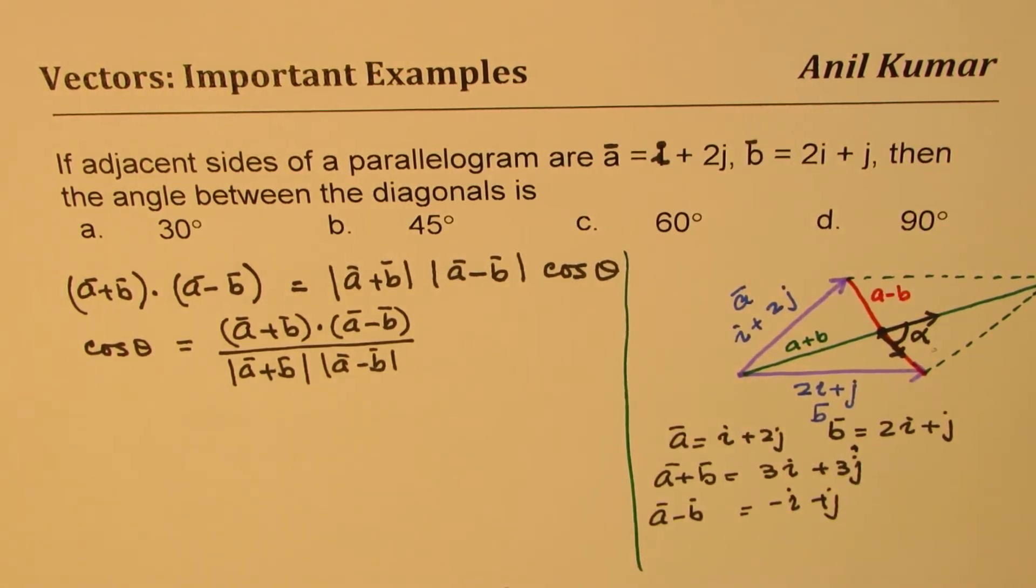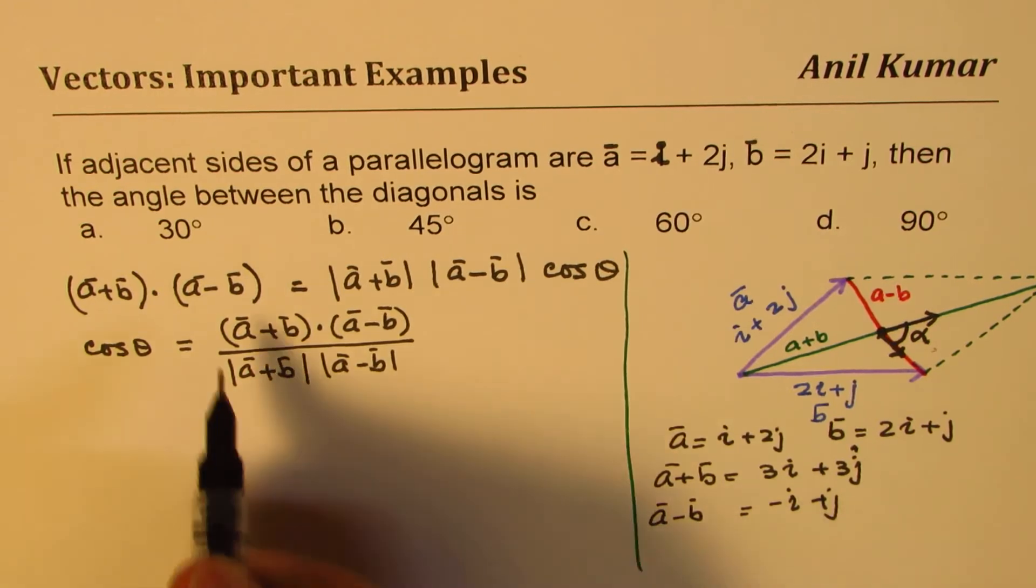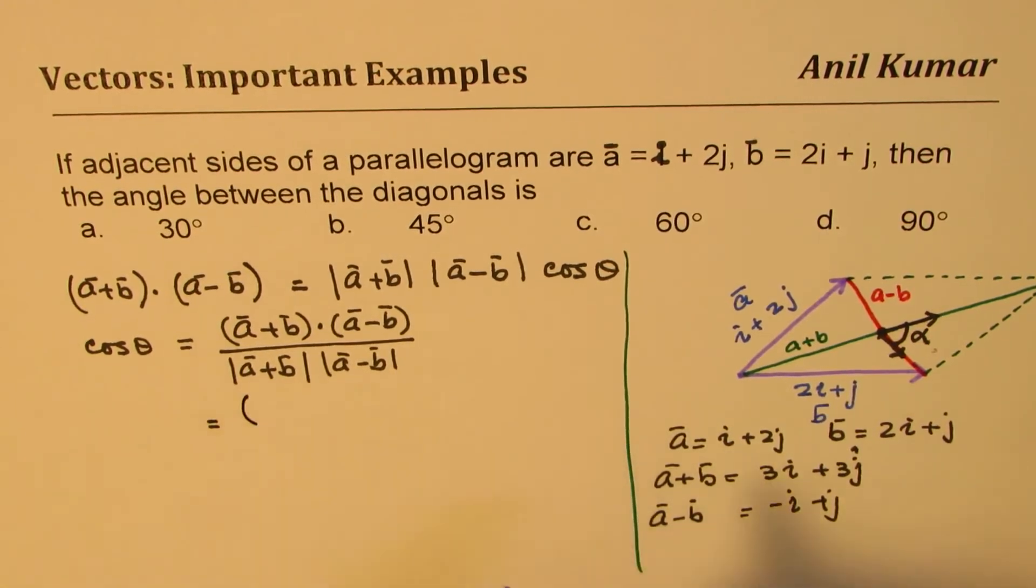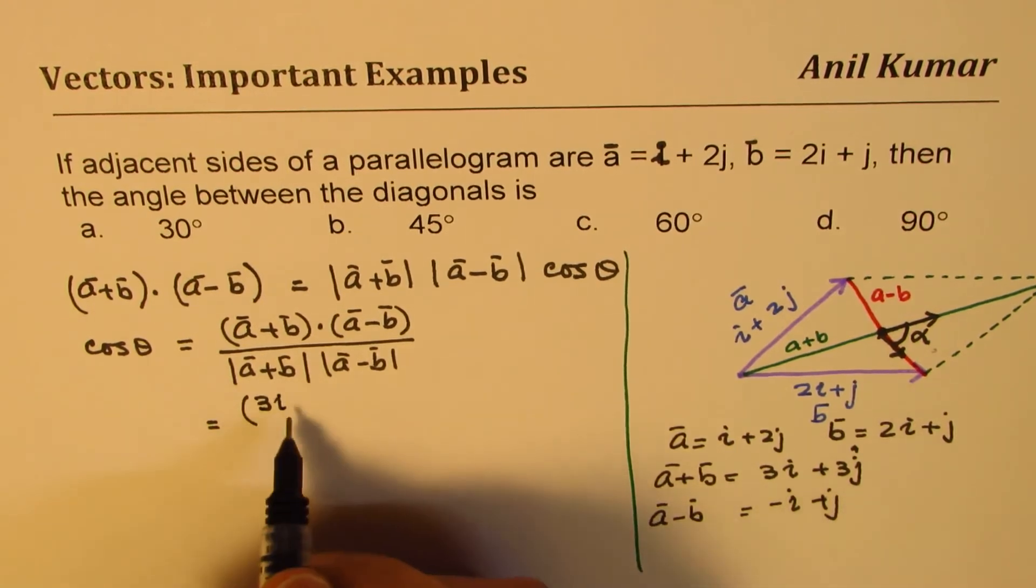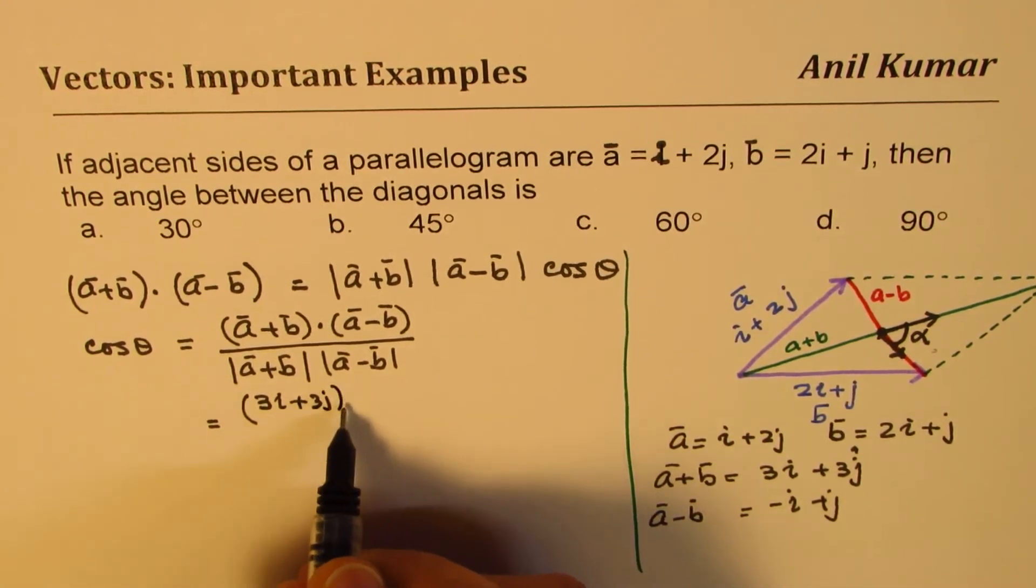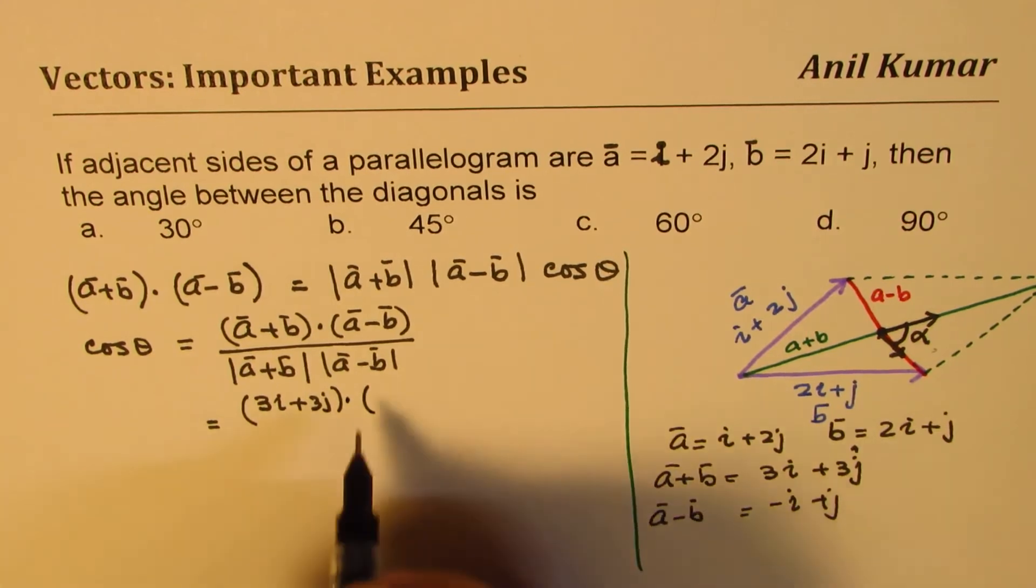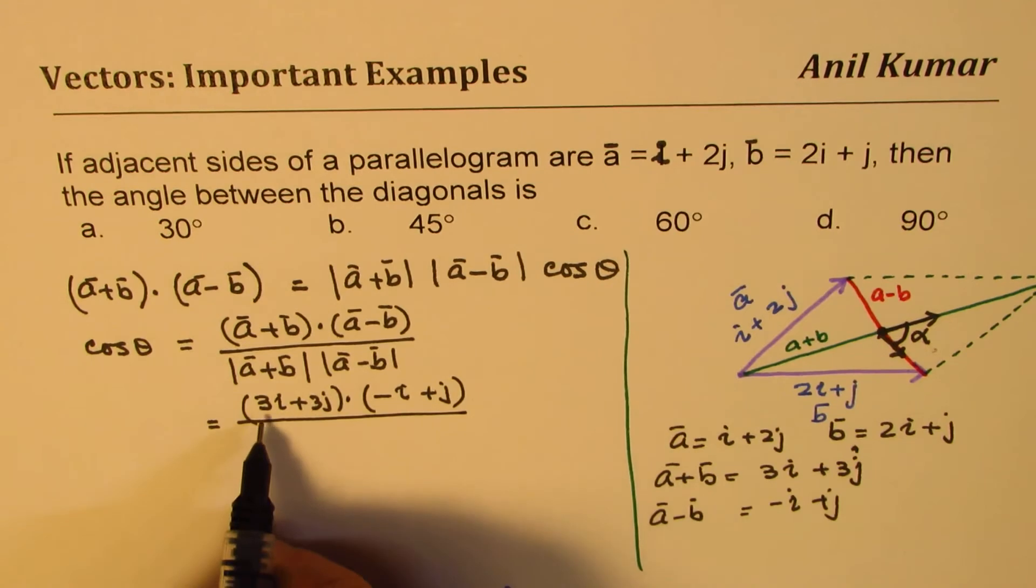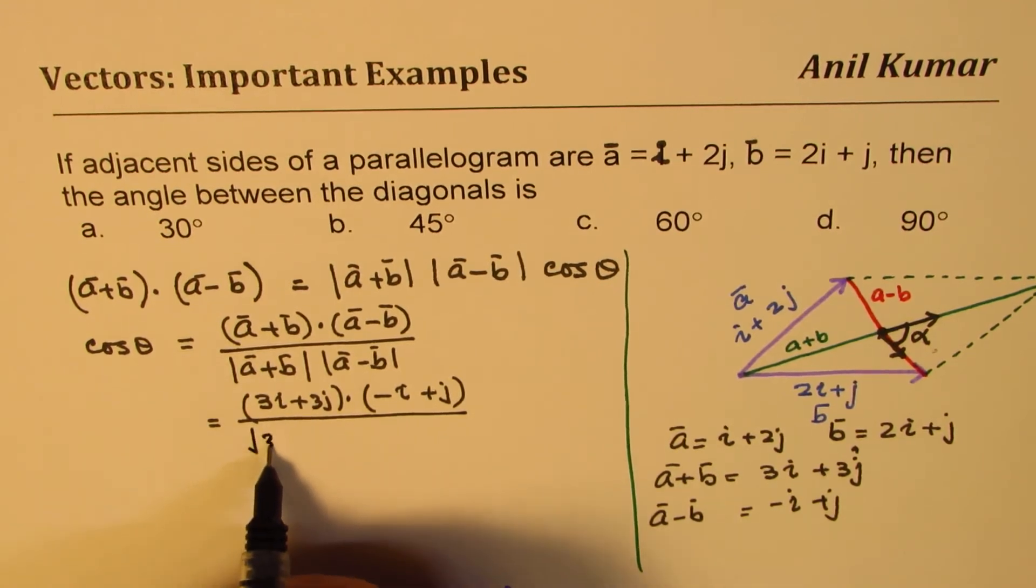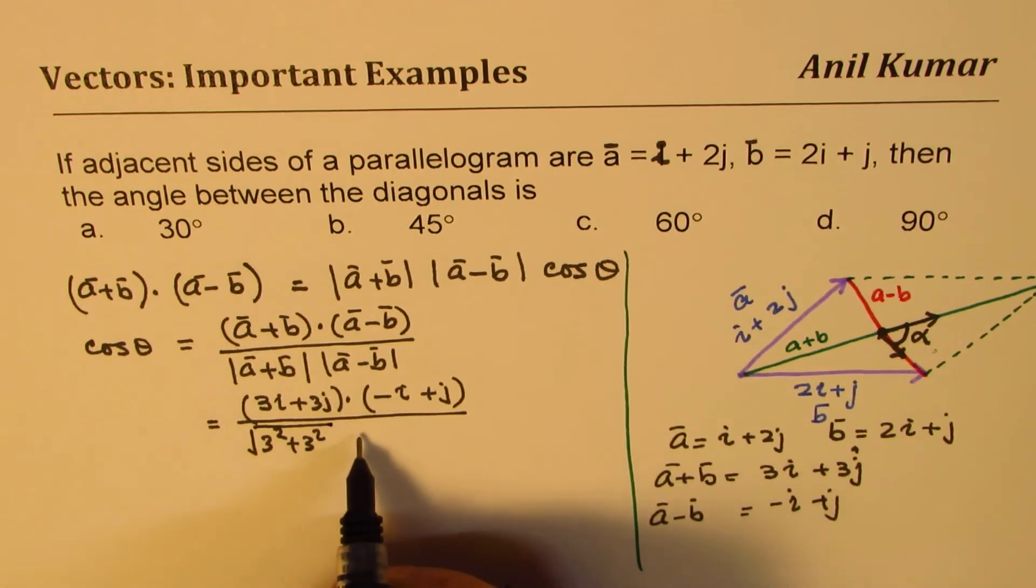So we get for a + b, we get 3i + 3j dot -i + j. Now their magnitudes are 3² + 3² square root, so we'll write √(3² + 3²), and this magnitude is √(1² + 1²).